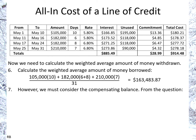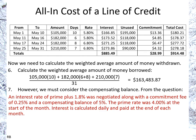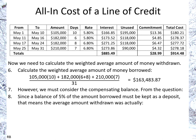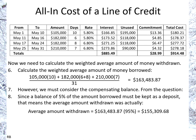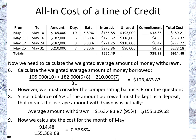That's how much was borrowed. How much the company could actually utilize relates to the compensating balance. Coming back to the question, there is a compensating balance of 5%, meaning 5% of the amount borrowed must be kept as a deposit. So the average amount actually available is 95% of $163,000, giving us $155,000. The cost of borrowing for May is $914.48 divided by $155,000, which is 0.5888% for the month.